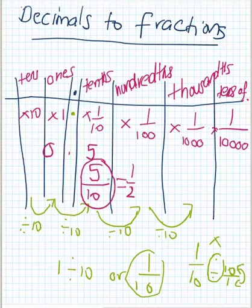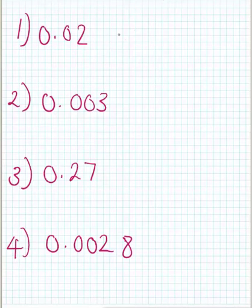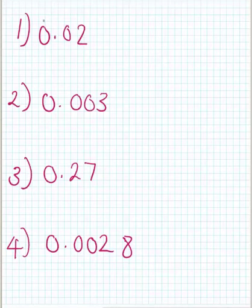Let's try examples where we mentally turn decimals into fractions. When we do this, you should simplify your fractions as well, but at this stage we're just practicing turning them into fractions. We've got 0.02. Always check if you have a whole number — for these ones it's all zero, so we're not going to have a mixed fraction.